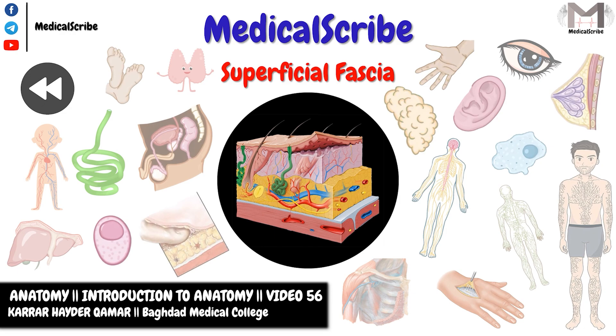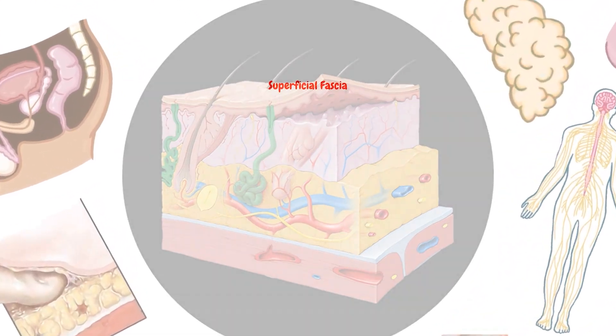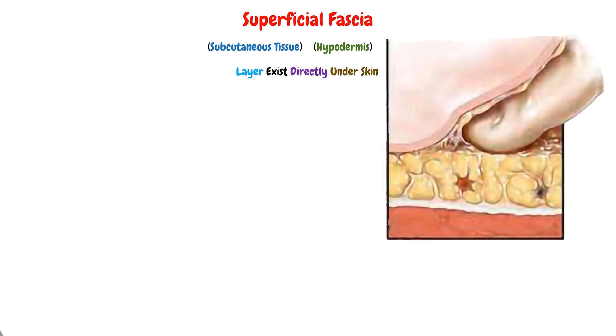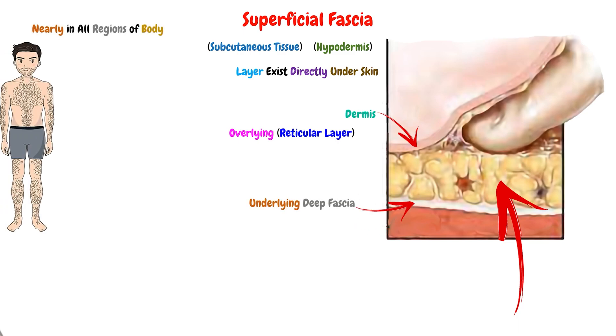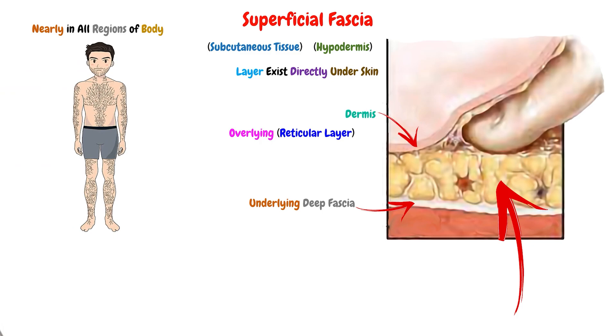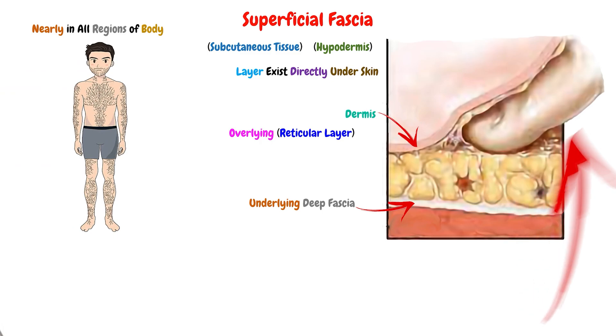In the first video we will explain the superficial fascia, while in the second one we will talk about its functions. The superficial fascia, also called the subcutaneous tissue or hypodermis, is the layer that exists directly under the skin. It connects the overlying reticular dermis layer with the underlying deep fascia, and it exists in nearly all regions of the body.